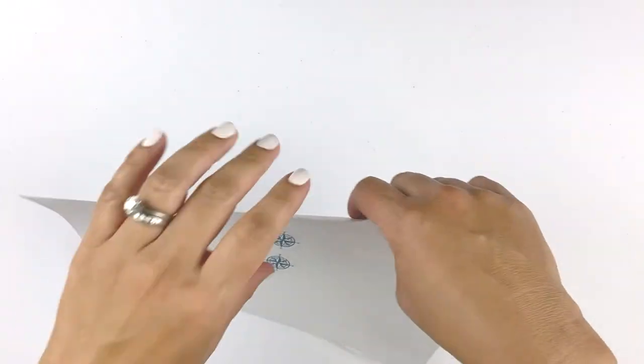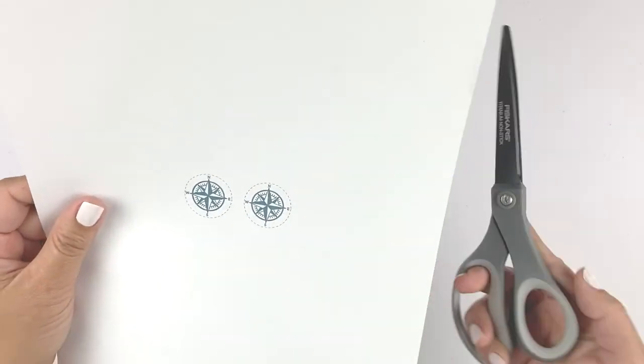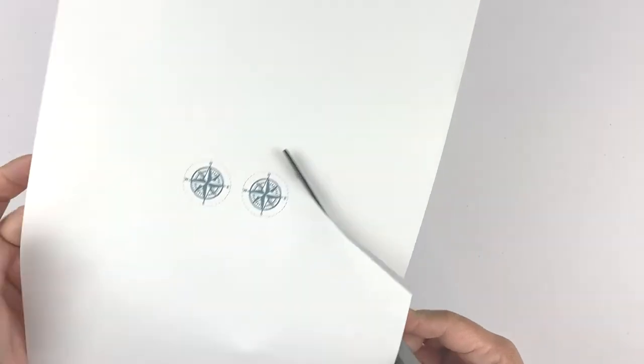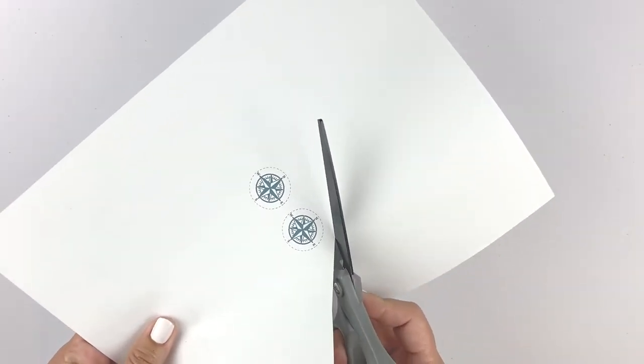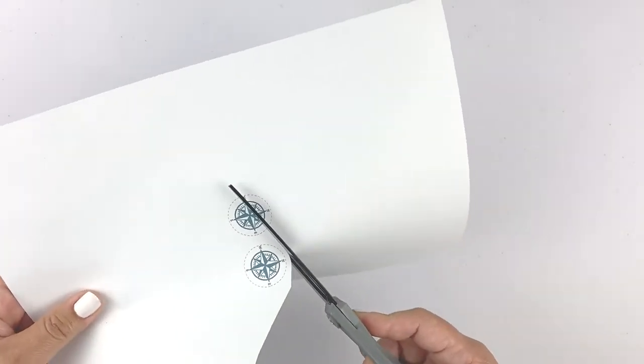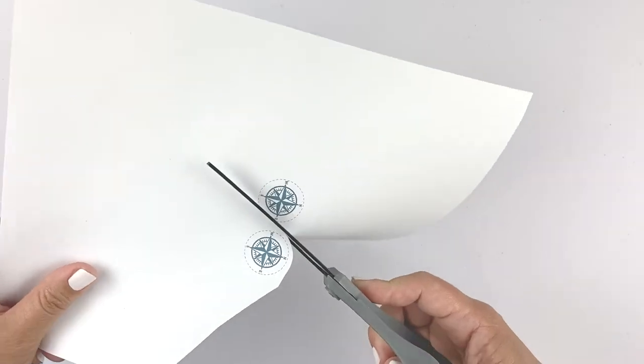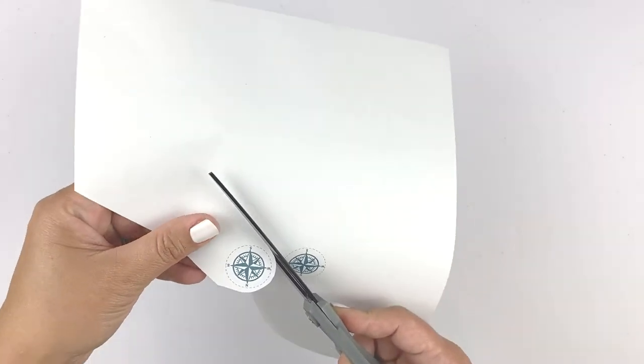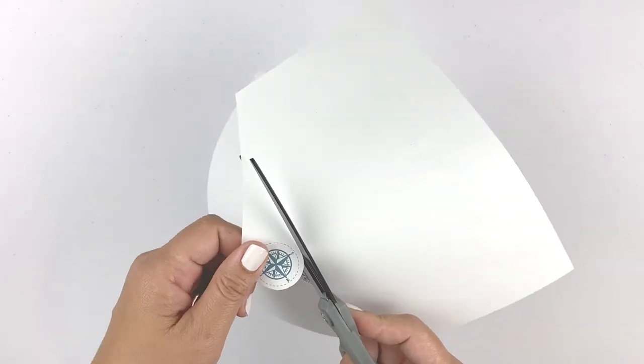Next we're gonna get our compass printout. There's two just in case you make a mistake, so we'll only need one. With your scissors you're just going to cut them out. Cut along the dotted line or a little bit beyond it because it fits in there even if it's a little bit bigger.